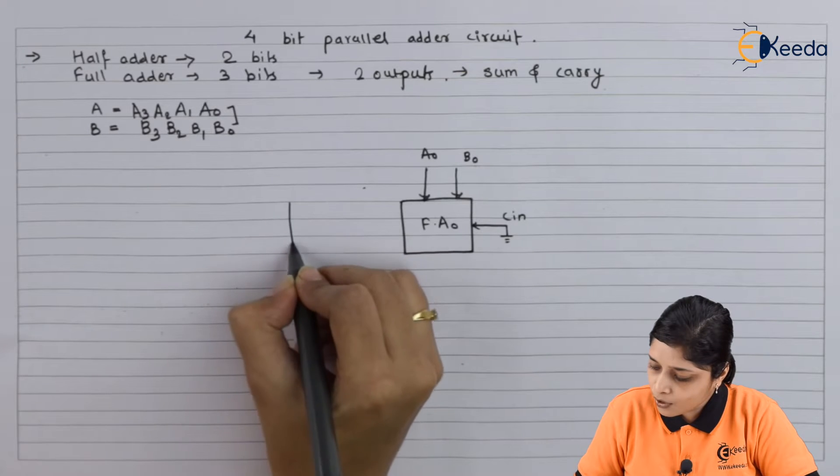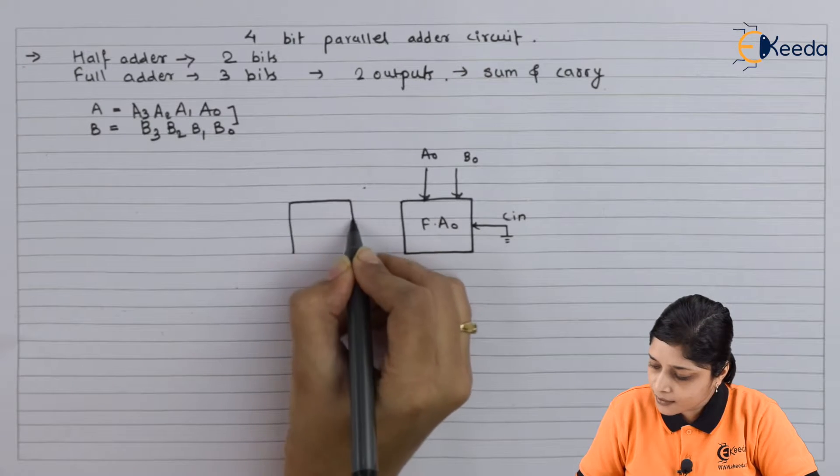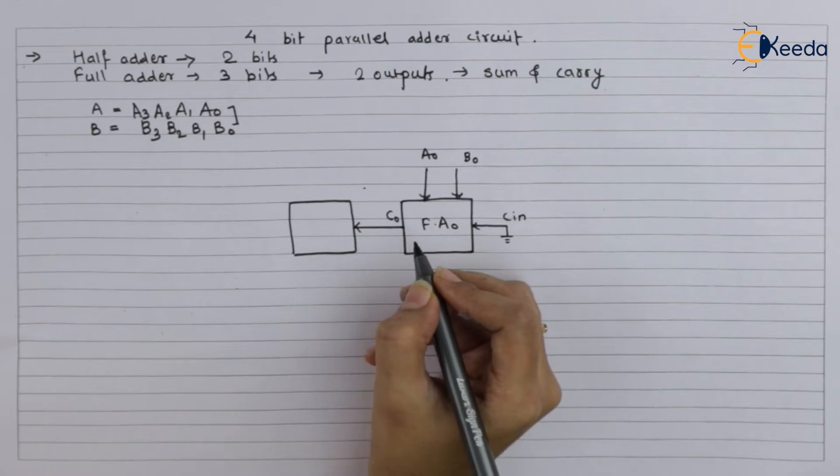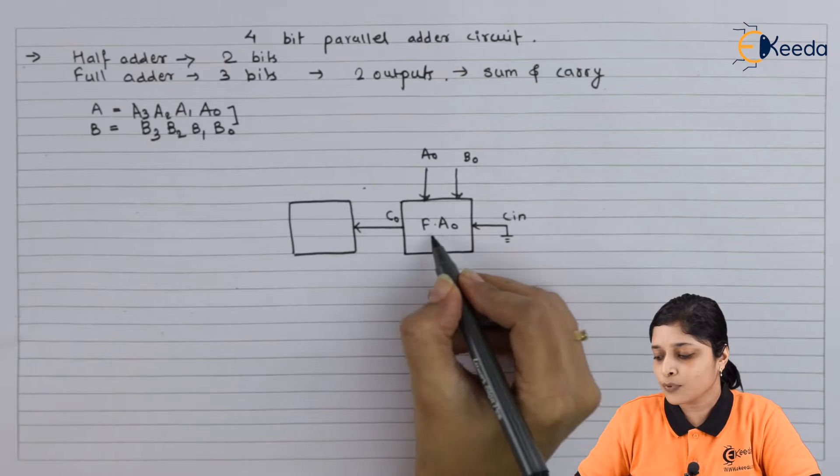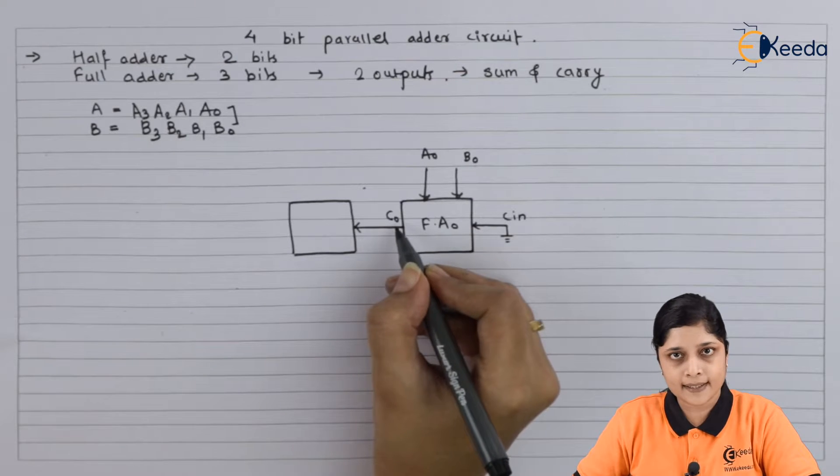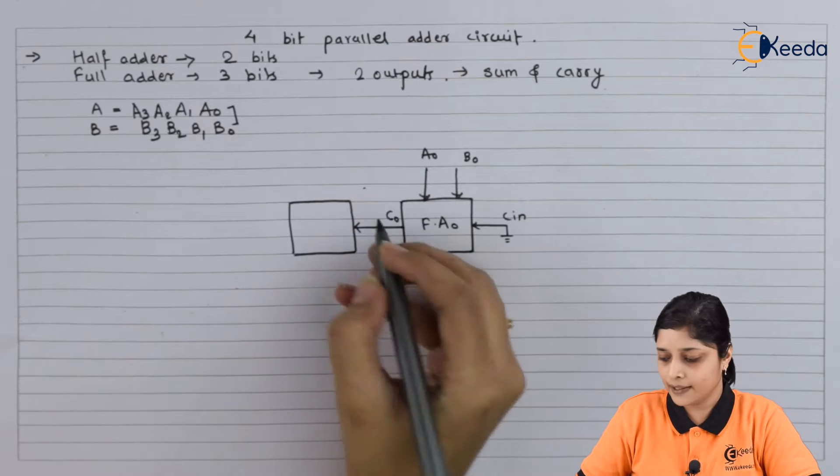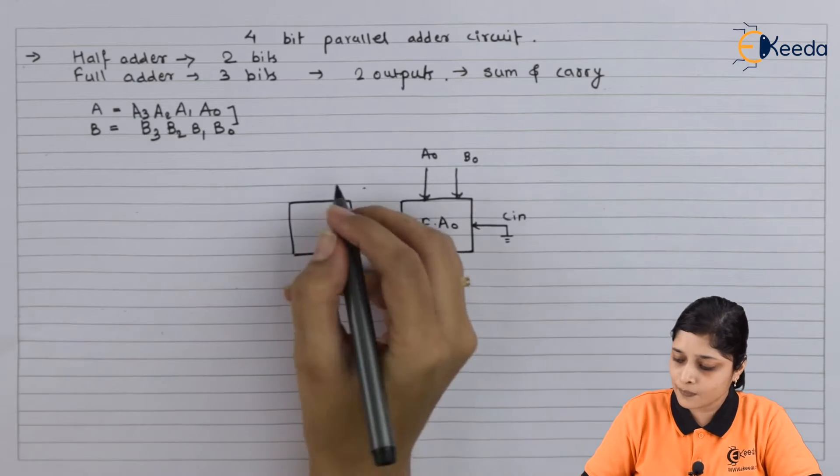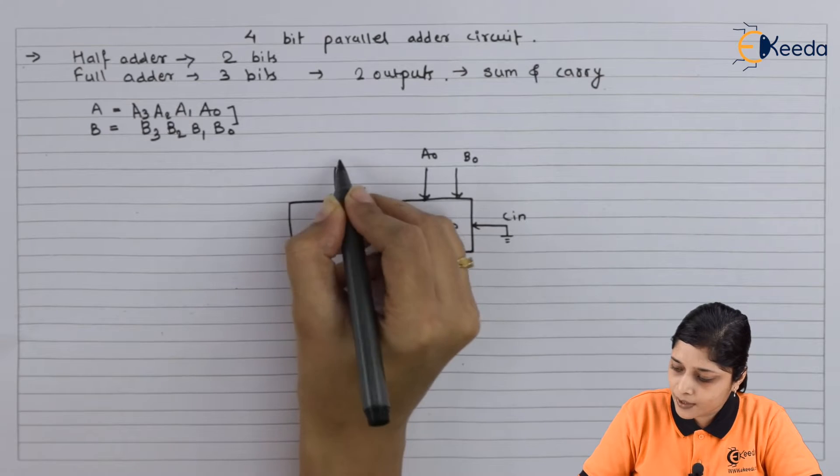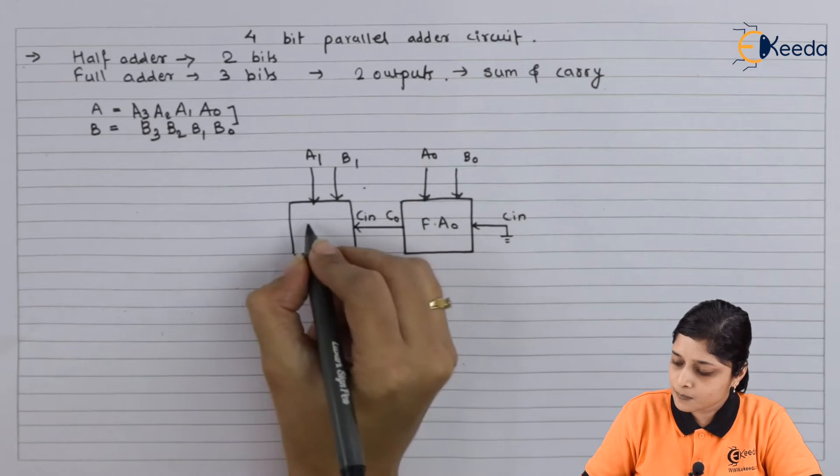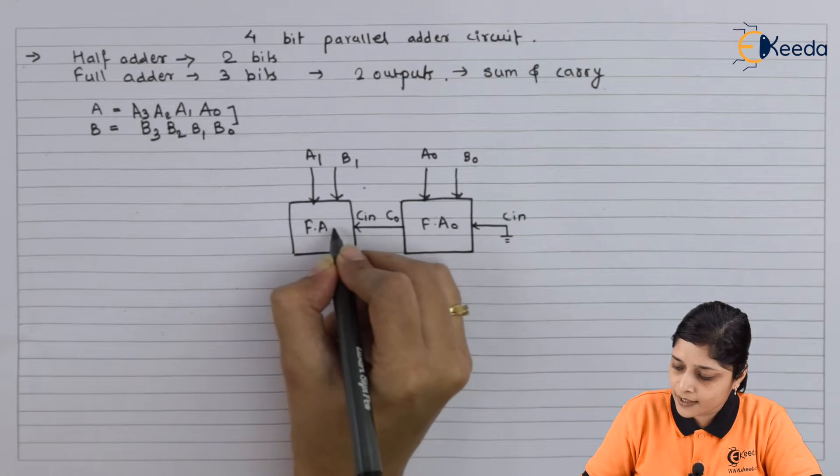After that you have to draw second full adder. So here full adder suffix 0 has an output C0, it is a carry. It can be the input for next full adder, so we can write here B1, A1. This is full adder 1.